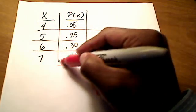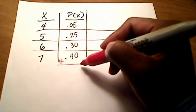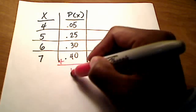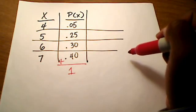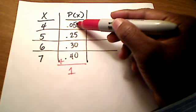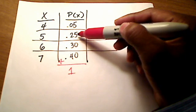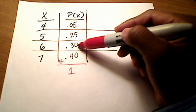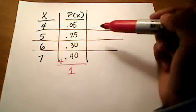If you were to add up all of these probabilities, they should equal 1, because if they don't, just stop — you can't even do the problem. So 0.05 added to 0.25 is 0.30, 0.30 added to 0.30 is 0.60, and 0.60 added to 0.40 is certainly 1.